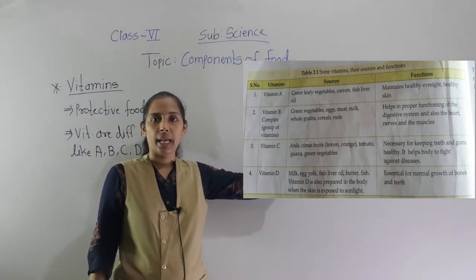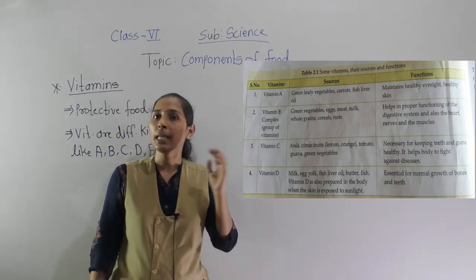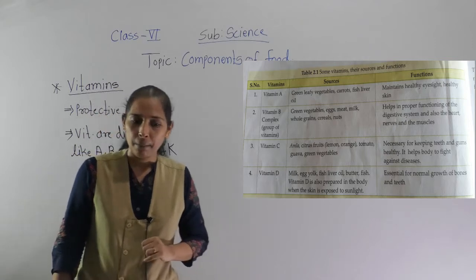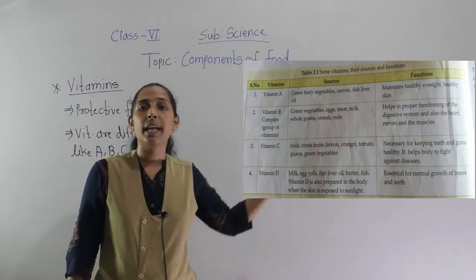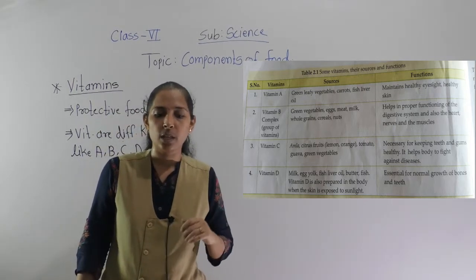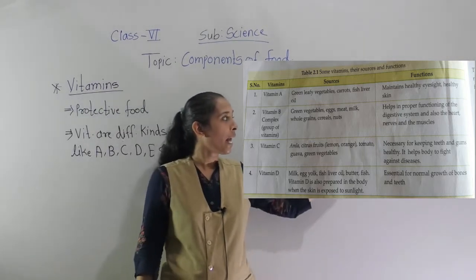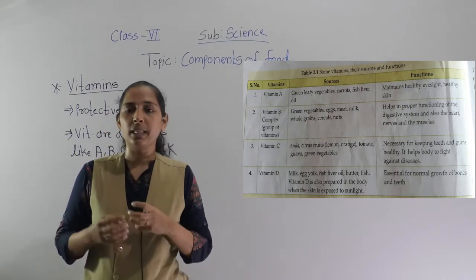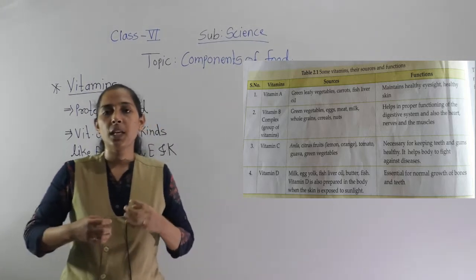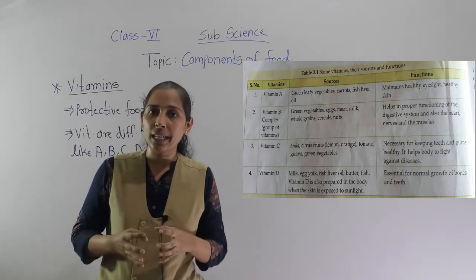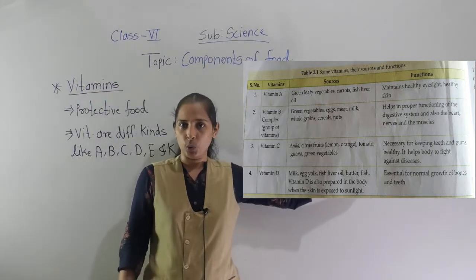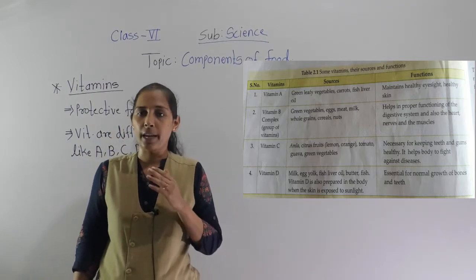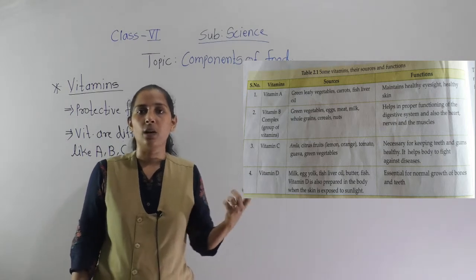All those food materials are sources of vitamin B. The functions of vitamin B complex are: it helps in the proper functioning of the digestive system, and also maintains the heart, nerves, and muscles. Vitamin B complex is necessary for proper digestion and for keeping our heart, nerves, and muscles healthy.